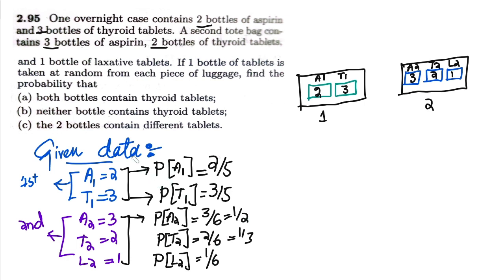Now, why am I spending this much time on the given data? Because in these types of questions, if you have a clear picture of all the given data and have transformed them into probabilities or mathematical terms, you can very clearly find the relevant formulas and strategy to determine what is required and what you have to do.